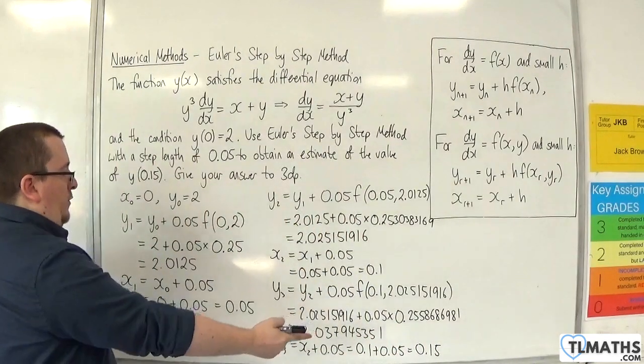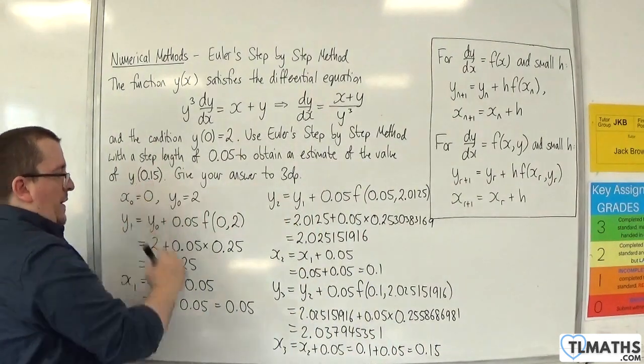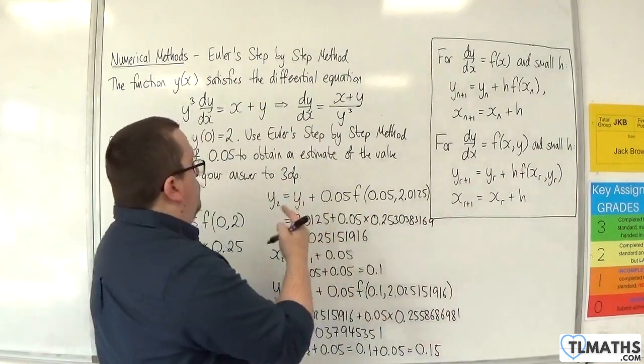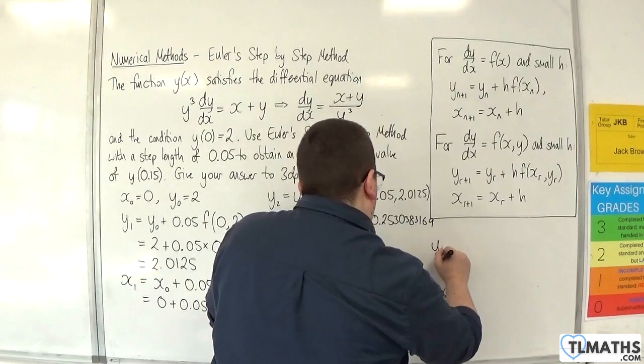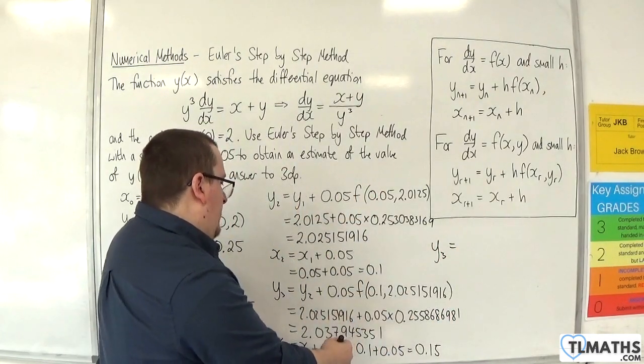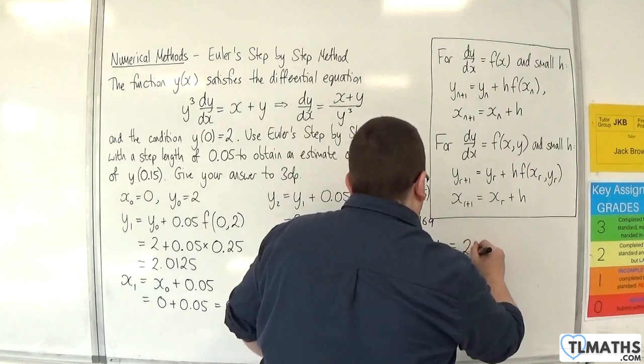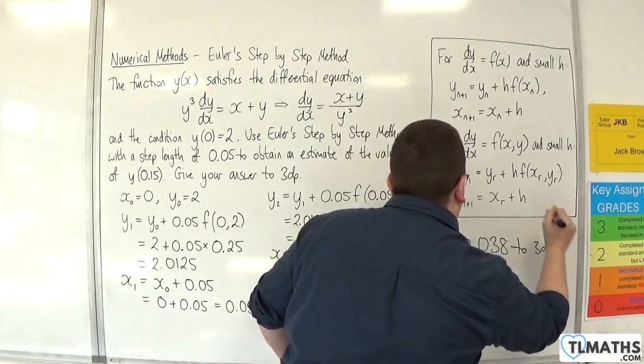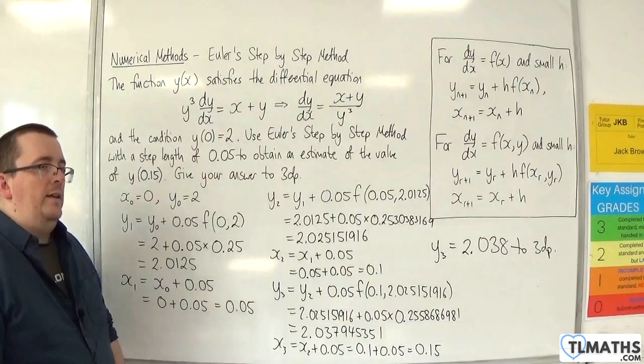So this is the x value that we wanted to get to, and we found the corresponding y value, which is that. So to 3 decimal places, y₃ is 2.038.